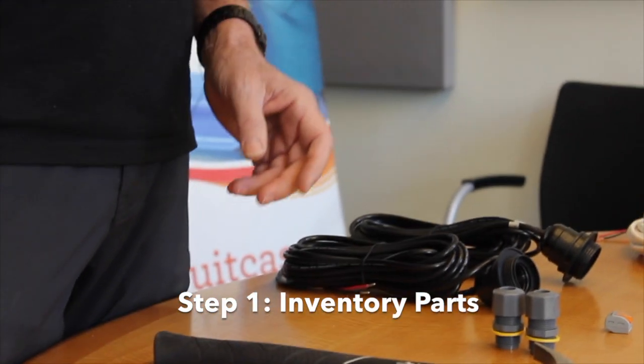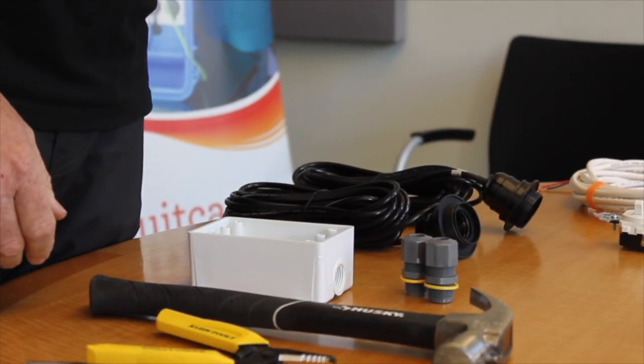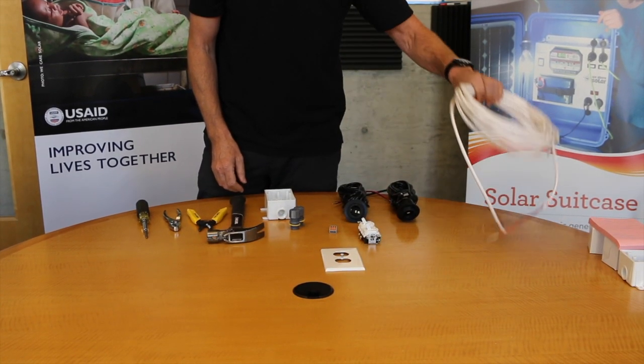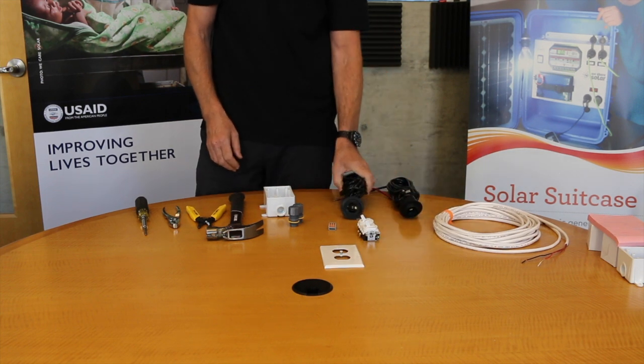So we have the electrical box, we have the cord grips, we have the terminal block, we have the switch, we have the cable coming from the solar suitcase to the box, and we have the two lamp cords, and finally the cover plate.